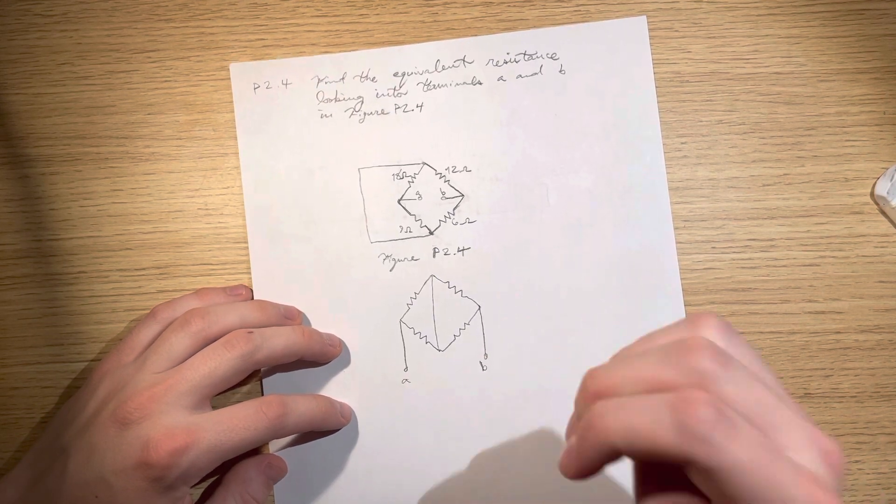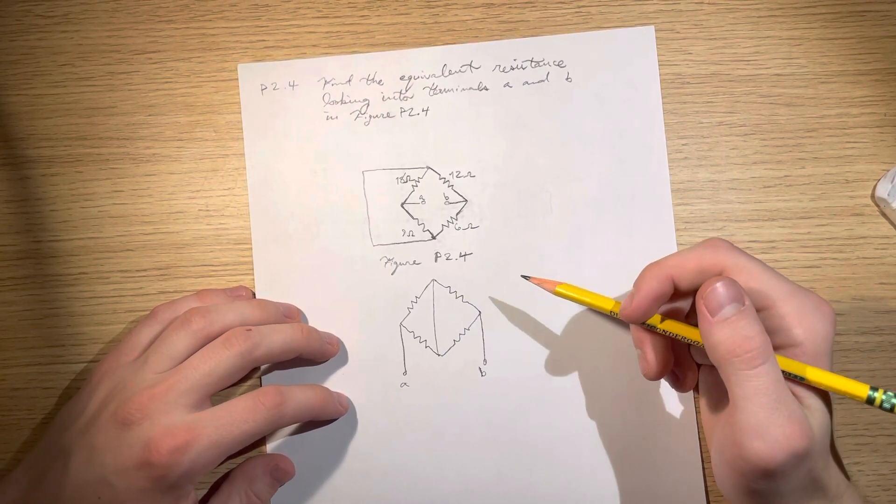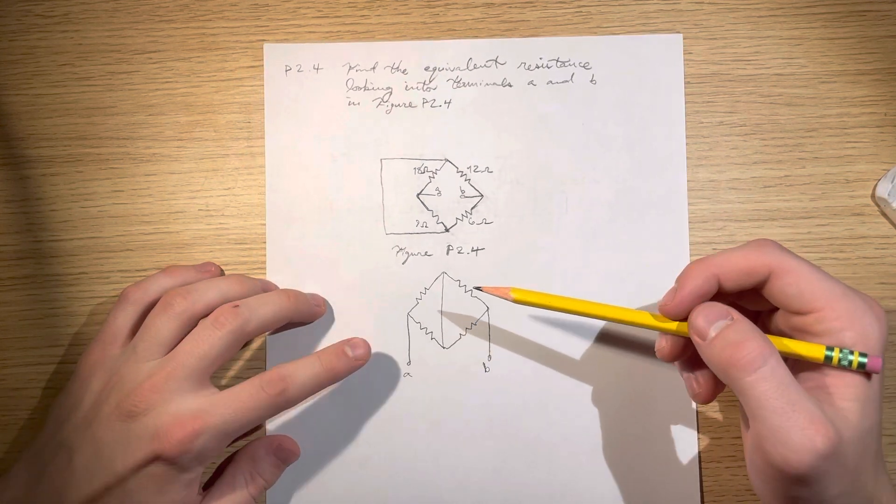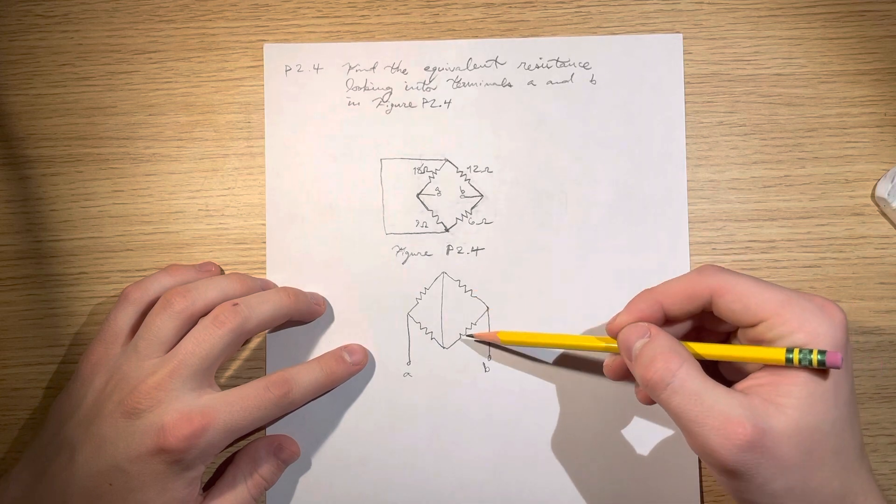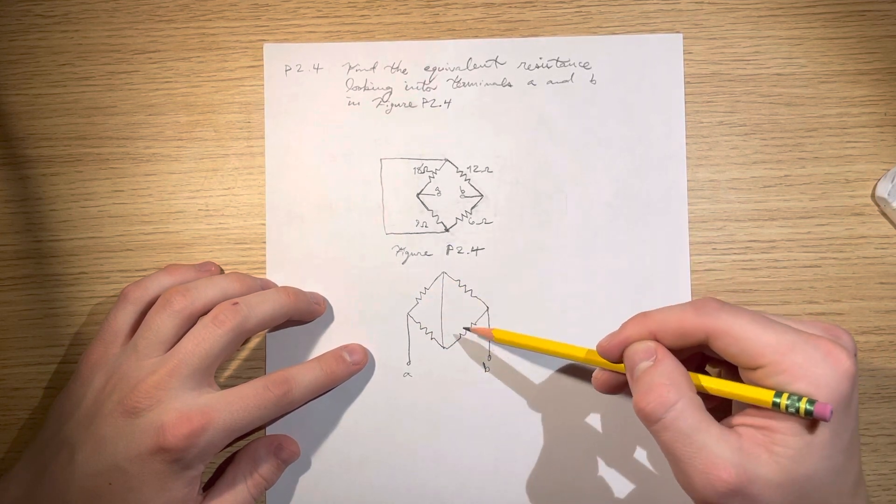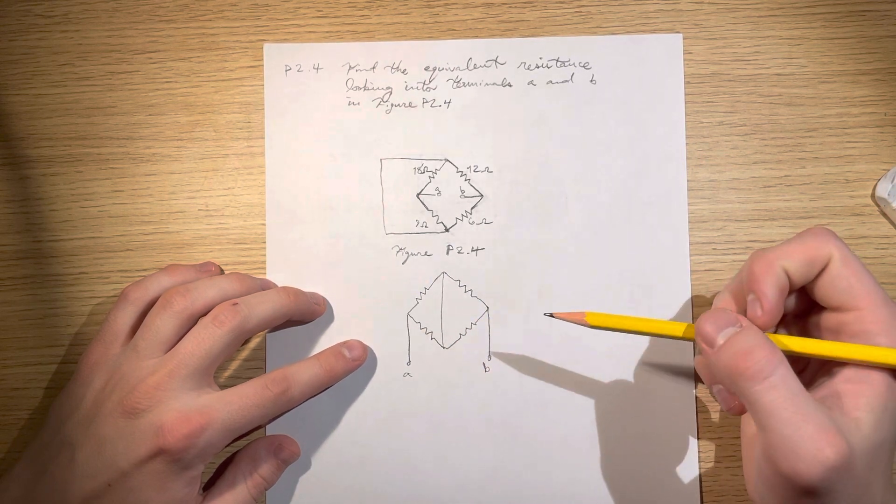This will be B, this will be A. And if we saw the last video, this is basically just parallel. This whole box shape is just two parallels that are actually in series.